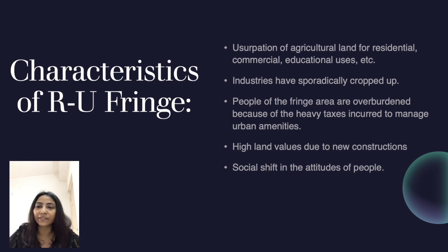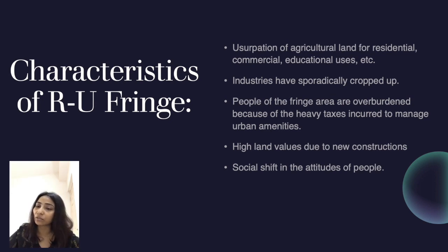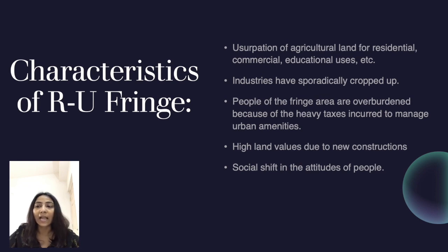Now we will discuss some of the characteristics of rural-urban fringe areas. Number one is the assumption of agricultural land for residential, commercial, and educational uses. Urban-rural fringe areas have vast tracts of land and the land is also cheap compared to city areas, and therefore commercial and educational activities are now shifting to these areas. Industries are also moving to these areas for the same reasons.